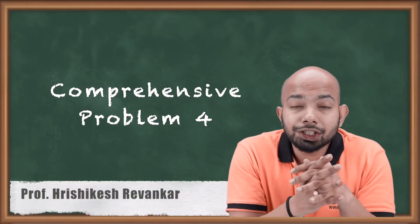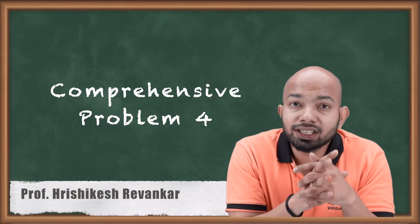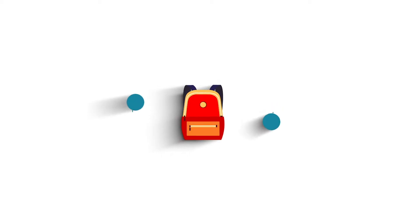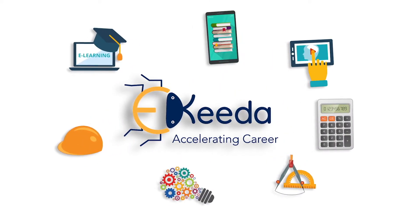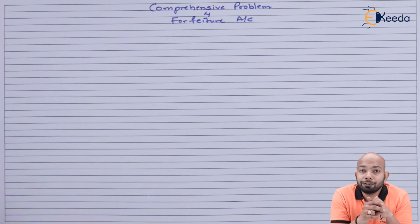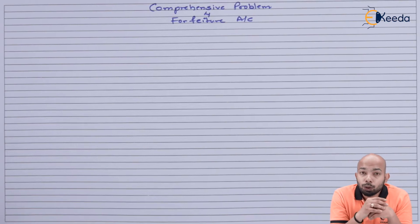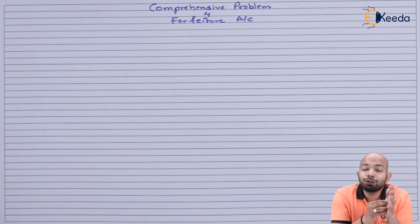We'll be discussing another illustration related to forfeiture of accounts, which will be a part of oversubscription. When discussing oversubscription, premium not paid — let's mix up everything and figure out how exactly the sum is supposed to be solved. In this illustration we'll be covering oversubscription, pro-rata, premium not being paid on allotment, and how forfeiture is supposed to happen when all these things are combined.